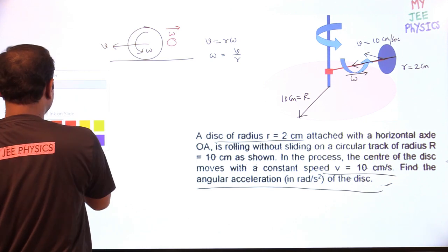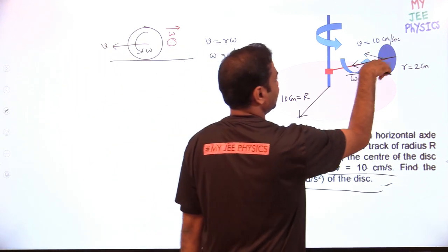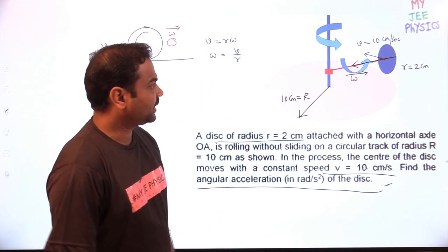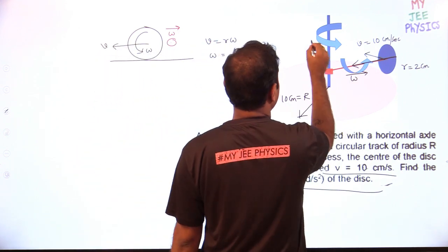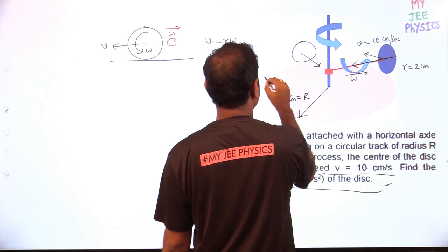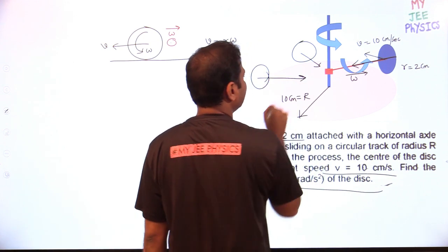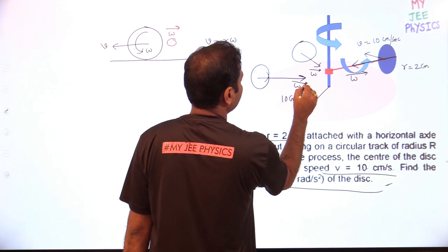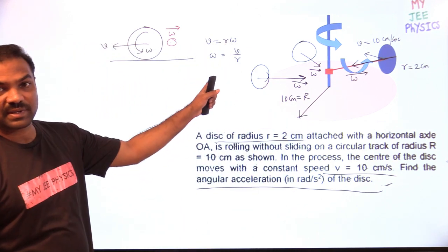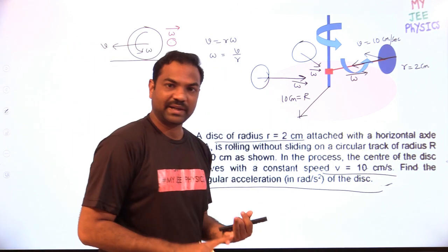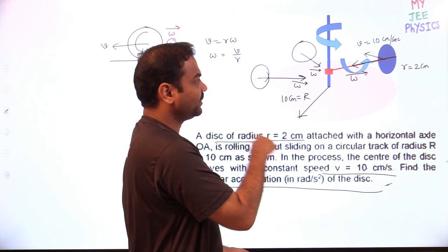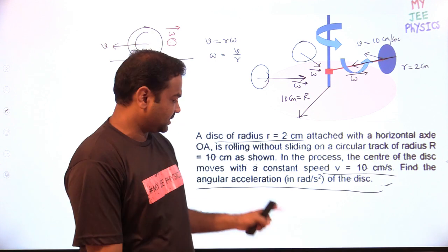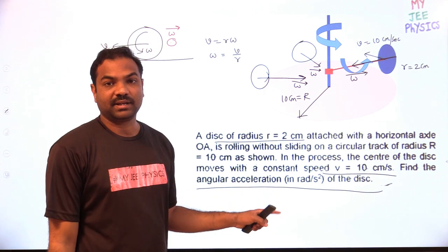Now, as the disc rotates along the circular track, what happens to the omega vector? If the disc is at one position, omega points one way; at another position, it points differently. So the direction of omega keeps on changing. The magnitude remains the same, but the direction keeps changing — and due to this change in direction, the disc is getting angular acceleration.